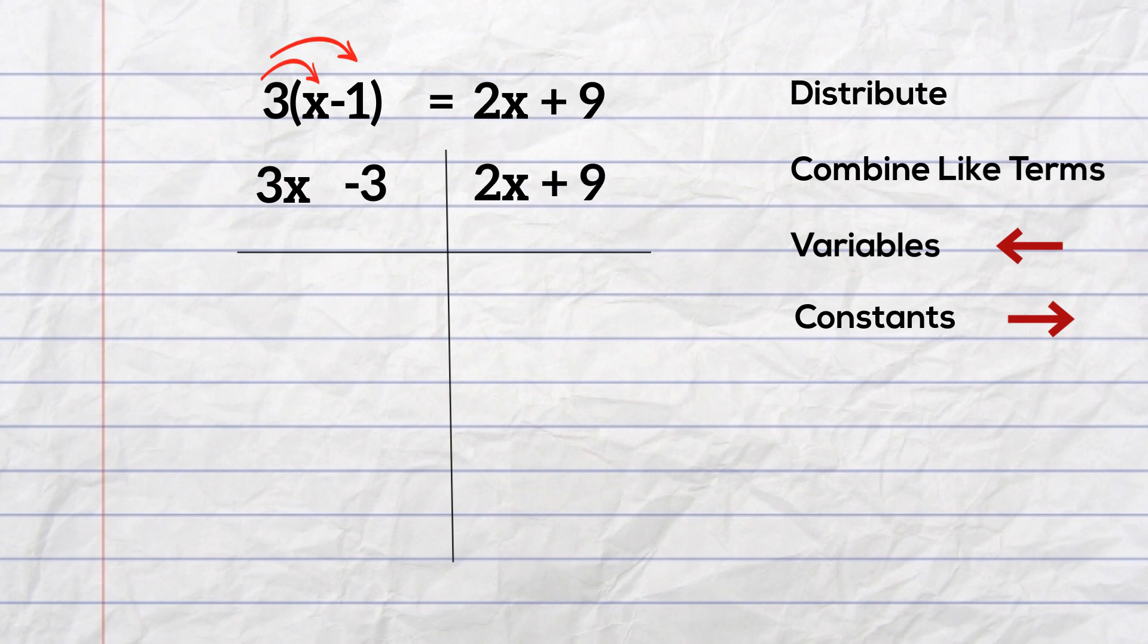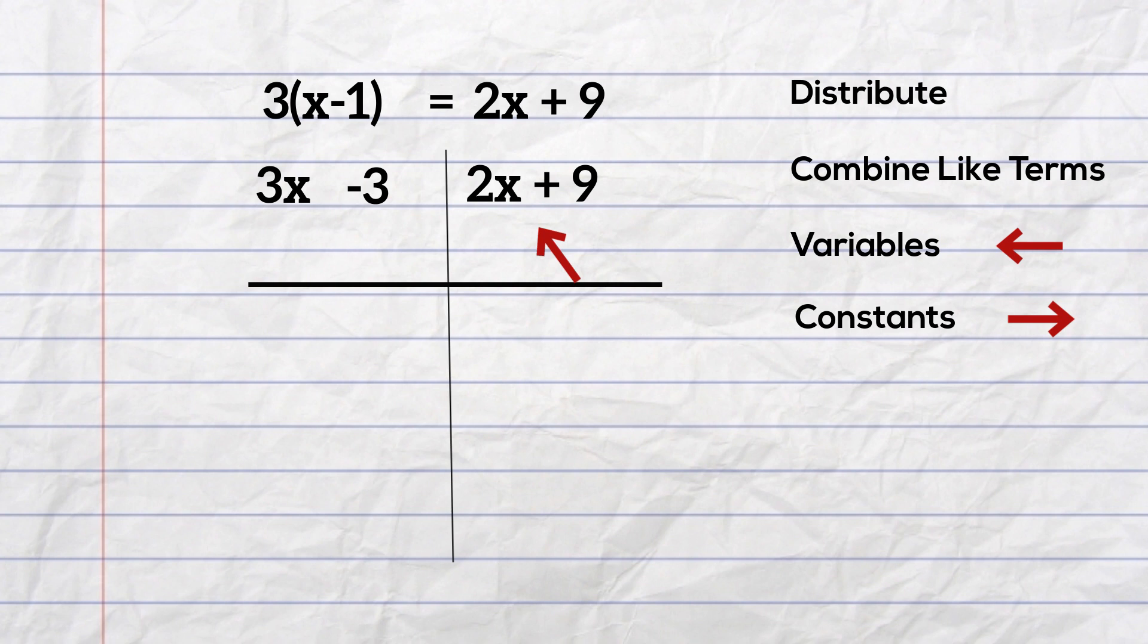So next, I need to move all of the variables to the left side of the equal sign. So I need to get rid of the 2x on the right. I can do this by subtracting 2x.